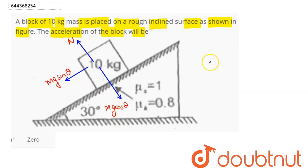Now if we calculate the value of normal, this comes as mg cos theta. We have mass as 10 kg, value of g is 10, theta here is 30 degrees.